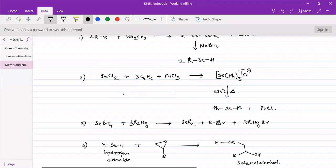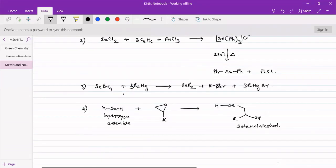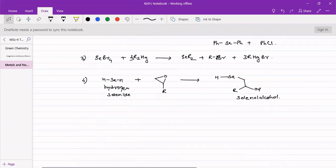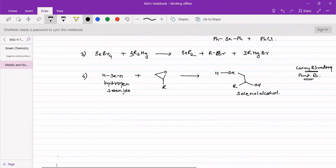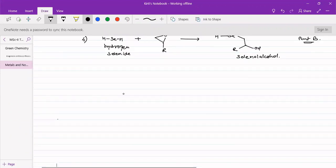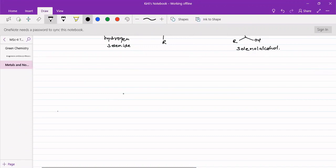The reference books for this organotin as well as for selenide is Carey and Sundberg part B. As these both topics organotin as well as organoselenides are present in it, you can refer these things. Here we will be taking up the general reactions for this organoselenols.